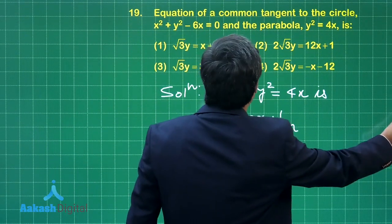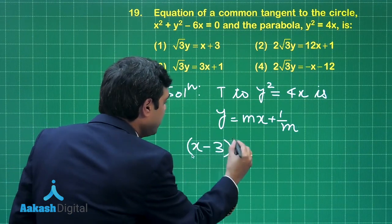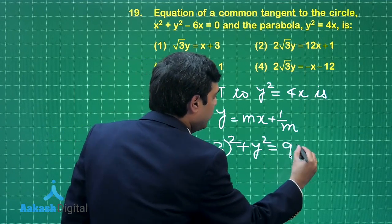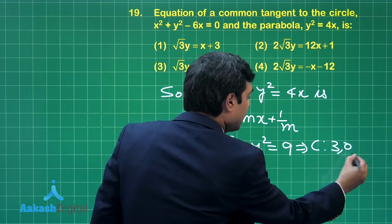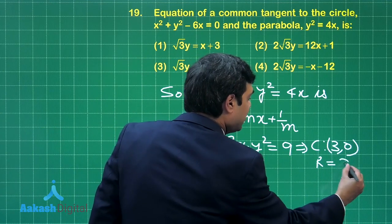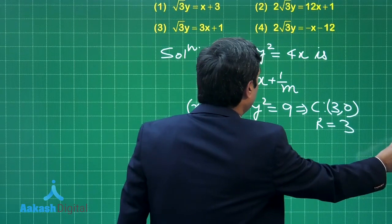Now, what is the center of the circle? Let us rewrite the circle: (x - 3)² + y² = 9, meaning center is (3, 0) and radius is 3 units. This is clear. Now drop the perpendicular from it to the line.